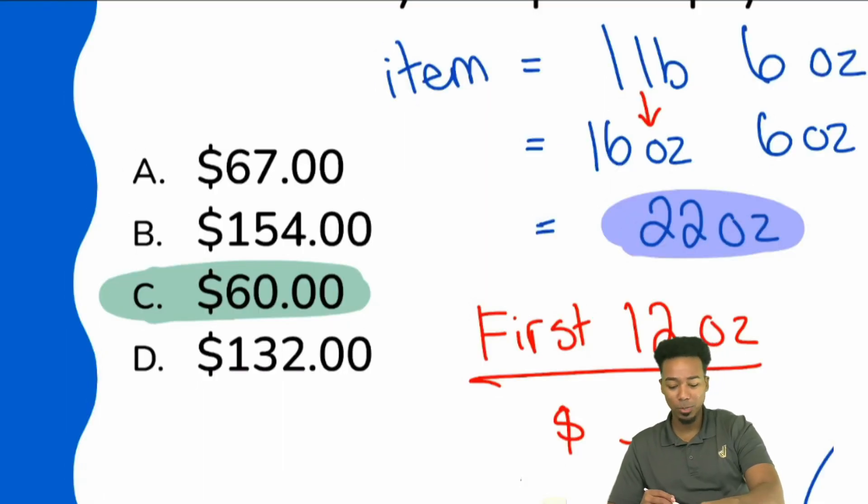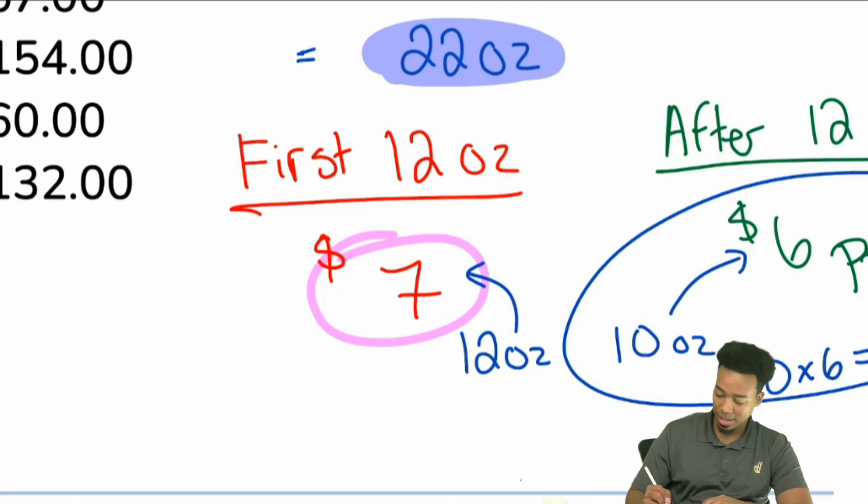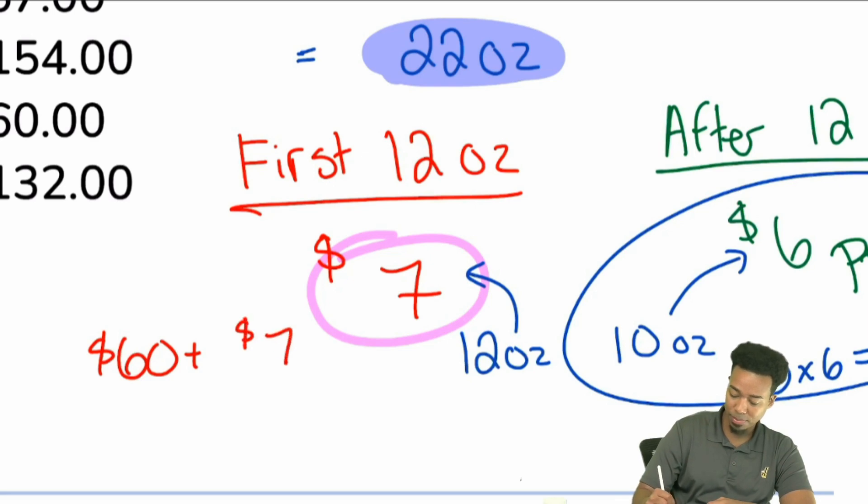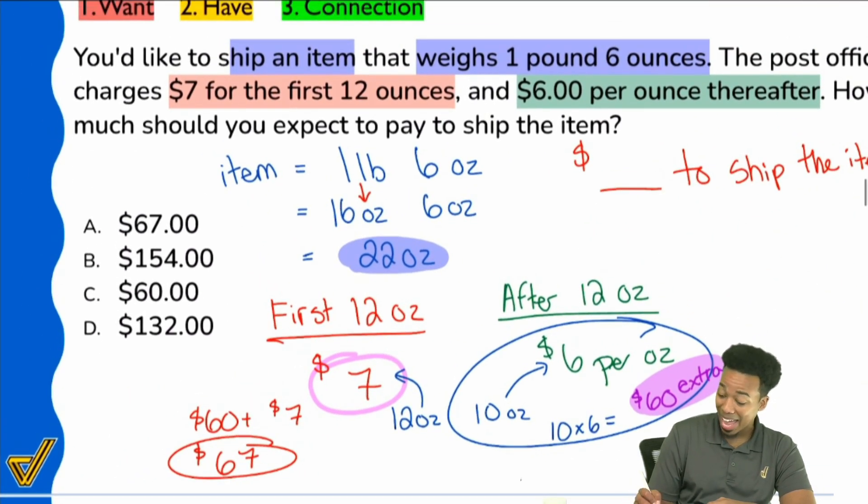It's not going to be C because we need to remember we still got charged seven bucks for the first 12 ounces. So it needs to add in. We need to account for that seven dollars from the beginning. So that'll be 60 plus seven, which would be sixty seven dollars. And boom, that's why A is going to be the correct answer.